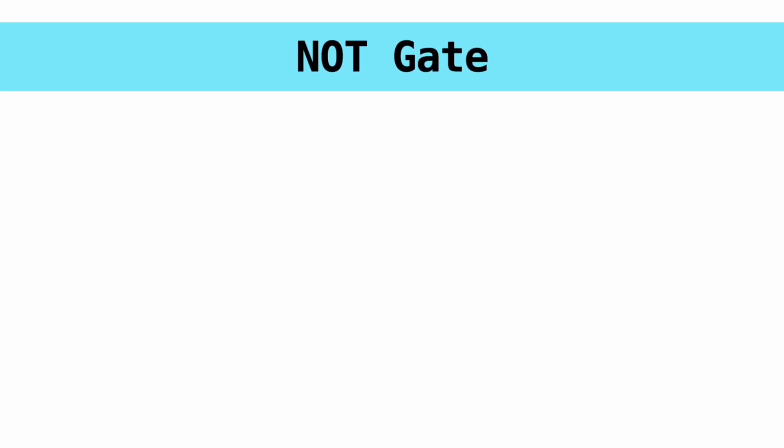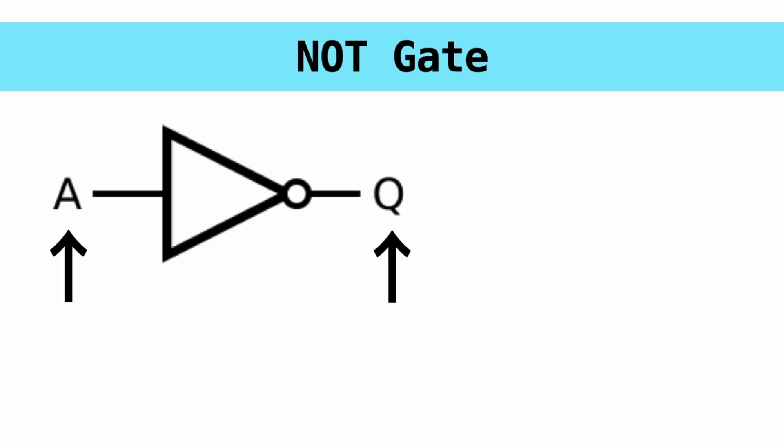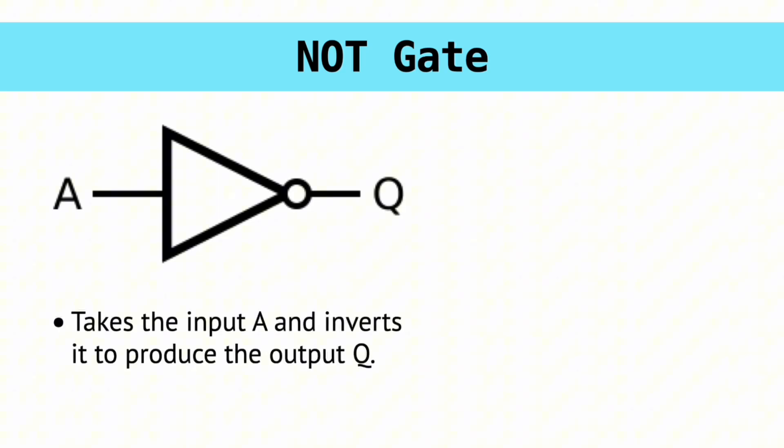The first one is the NOT gate. The diagram of the gate looks like this, with A being the input to the gate and Q being the output. What the gate does is that it takes the input that it receives and inverts it to the opposite value. If the input is 0, it outputs a 1. And if the input is a 1, it outputs a 0.